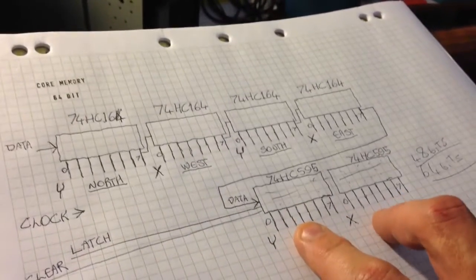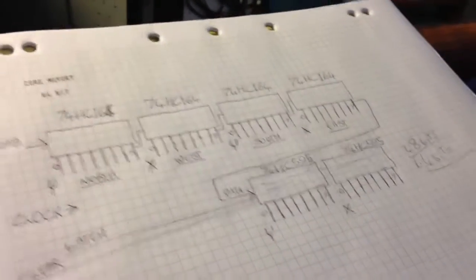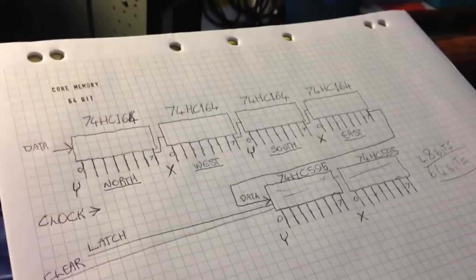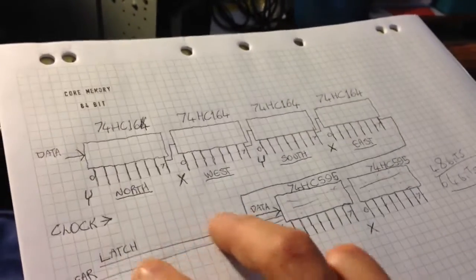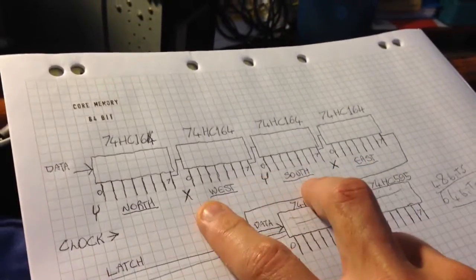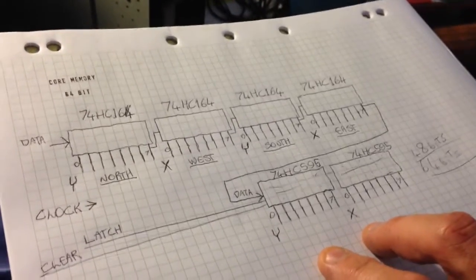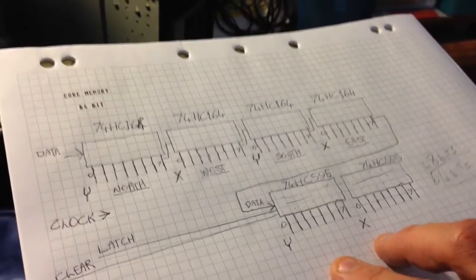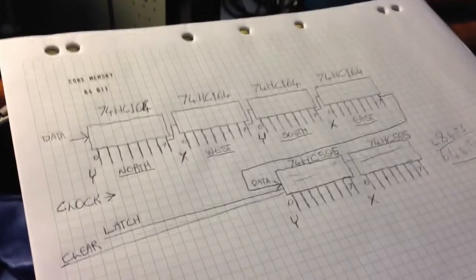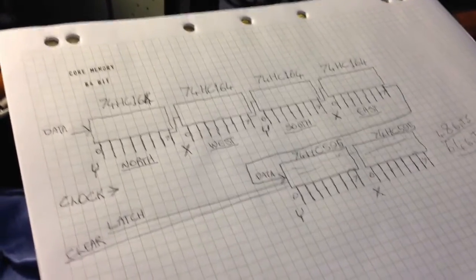These bottom two shift registers control the enable pins for the TI chips that drive the address lines in the core memory and the top four chips here are 32 bits that are the state bits for each end of each H-bridge and there's only half the number of enable pins because one enable pin controls both sides of an H-bridge in the Texas instrument chip.